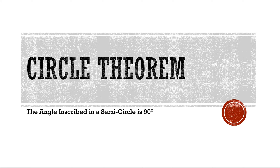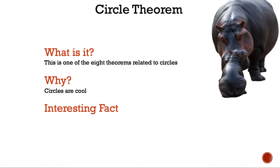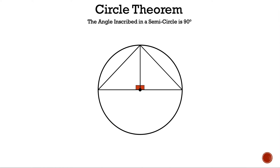Circle theorem: the angle inscribed in a semicircle is 90 degrees. This is one of eight theorems related to circles.